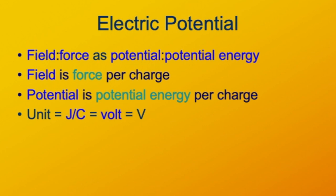Just as the unit of electric field was force per charge — newtons per coulomb — the unit for electric potential is energy per charge, joules per coulomb. This is so important that the unit has its own name. It's called the volt.